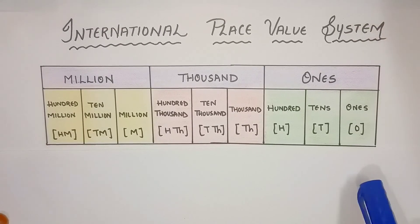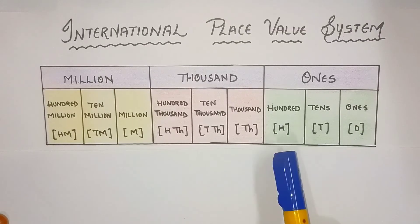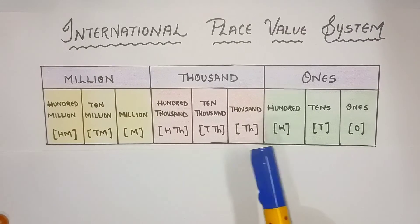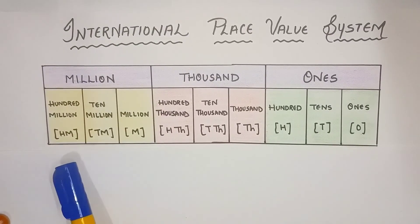For convenience, we have taken initials here: Ones, Tens, Hundreds, Thousand, Ten Thousand, Hundred Thousand, Million, Ten Million and Hundred Million.